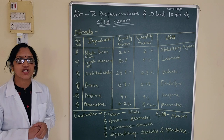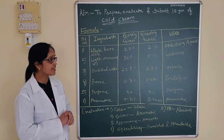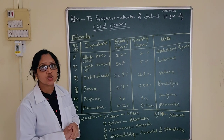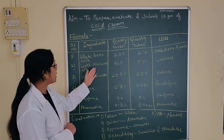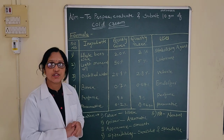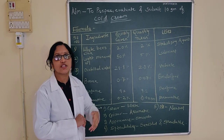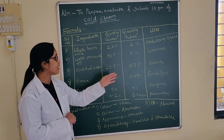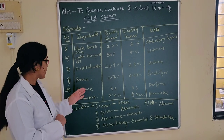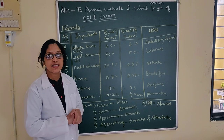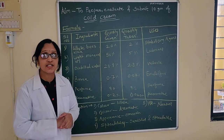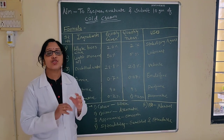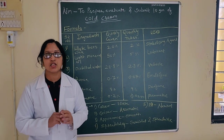Here is the formula with various ingredients used in cold cream. White beeswax is used as a stabilizing agent at 20%, and we have taken 2% for 10 grams of cream. Light mineral oil — or liquid paraffin can also be used — is 5% for 10 grams, used as a lubricant. Distilled water is 28.8%, used as a vehicle. Borax is used at 0.7% and acts as an emulsifier. Perfume and preservatives are used in quantity sufficient to prevent microbial growth.